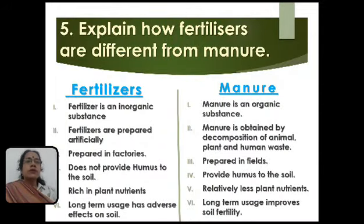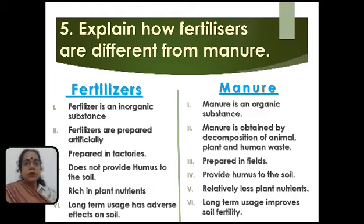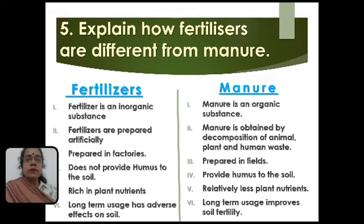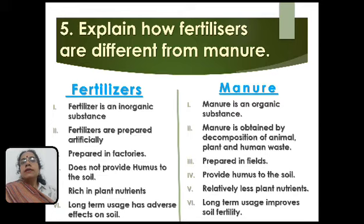The next question is: how are fertilizers different from manure? This is a very important question. The first point is fertilizers are an inorganic substance — a chemical substance manufactured in factories. Whereas manure is an organic substance. Fertilizers are prepared artificially in factories, whereas manure is obtained by decomposition of animal, plant and human waste.